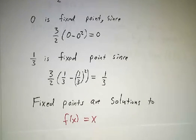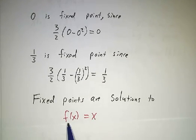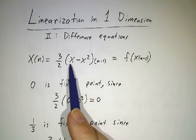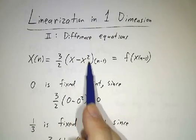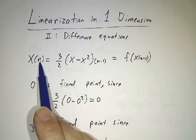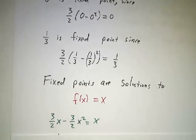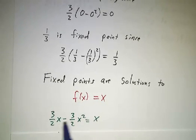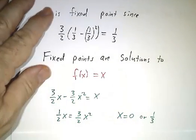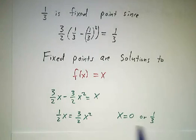The fixed points are not solutions to f of x equals 0. They're solutions to f of x equals x. Because if you have f of a equals a, if x is a yesterday, then x will be a today and from now on. So we solve this equation f of x equals x. 3 halves x minus 3 halves x squared equals x. Do a little bit of algebra, and we discover that x is either 0 or 1 third. So this system of equations has two fixed points, 0 and 1 third.